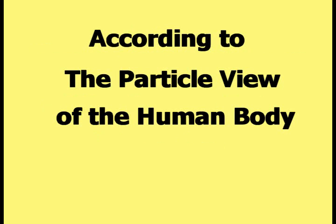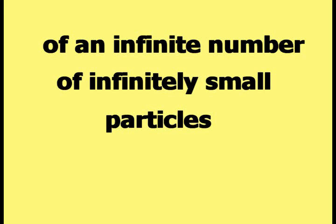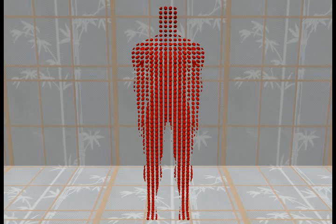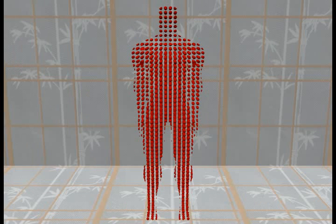According to the particle view of the human body, the human body can be treated as a collection of an infinite number of infinitely small particles. This object was used to represent a particle. This picture shows a small number of the particle objects gathered together in the shape of a human body, to provide an example of what the particle view of the human body looks like.